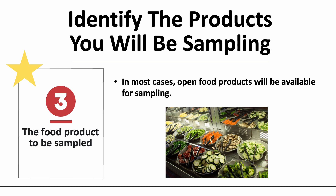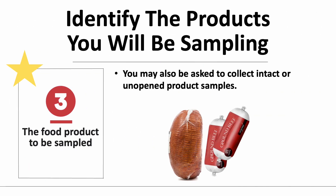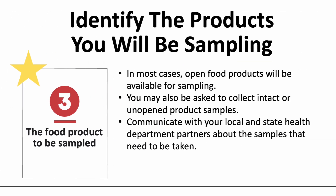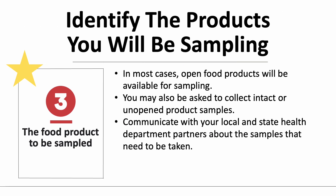In most investigations, open food product samples will be available for sampling — for example, salad ingredients taken from a salad bar. You may also be asked to collect intact or unopened product samples as well. Taking an unopened intact sample could help identify if a product was contaminated prior to entering an establishment. It is important to communicate with your local and state health department partners about whether both open and unopened or intact product samples would need to be taken.